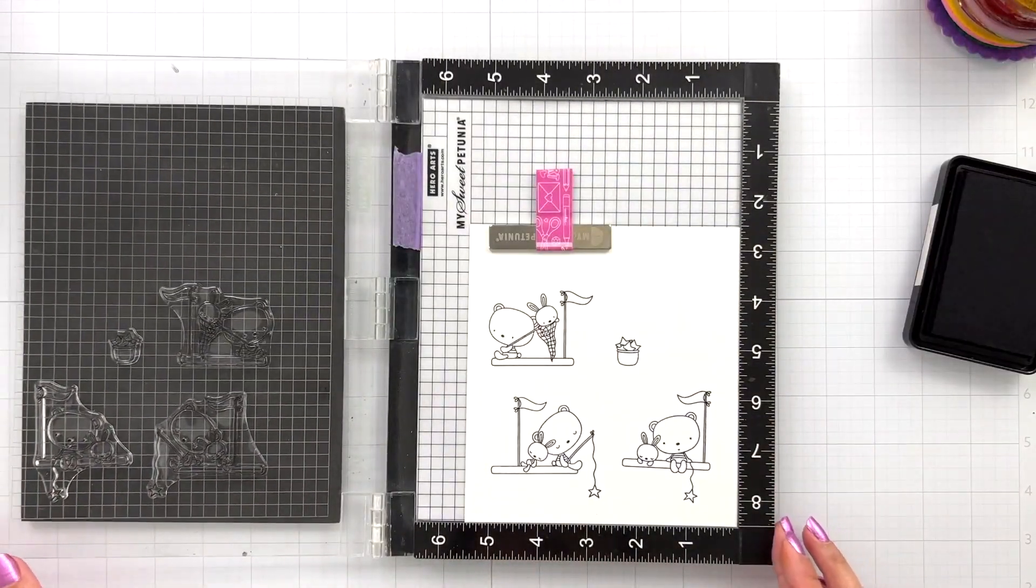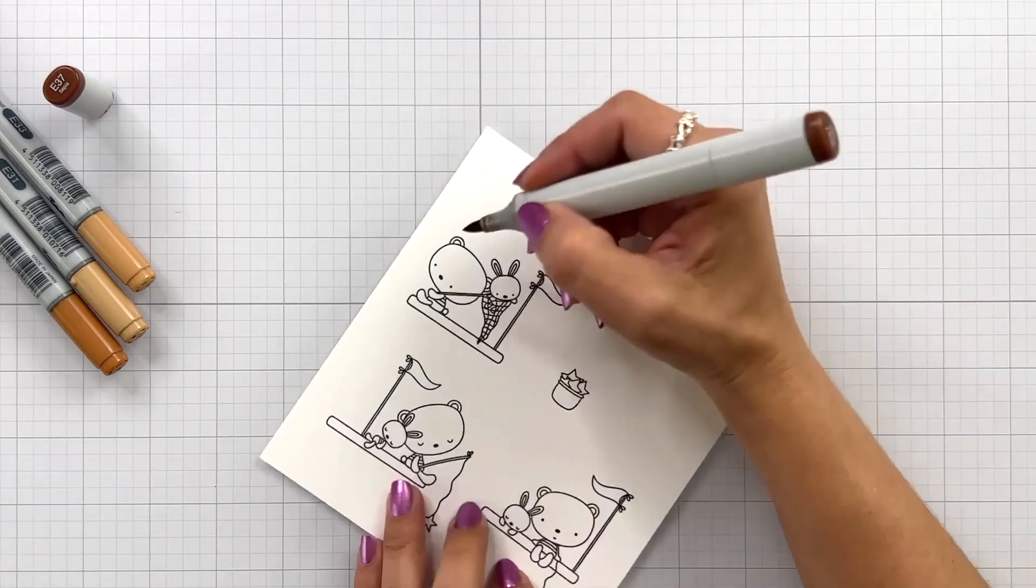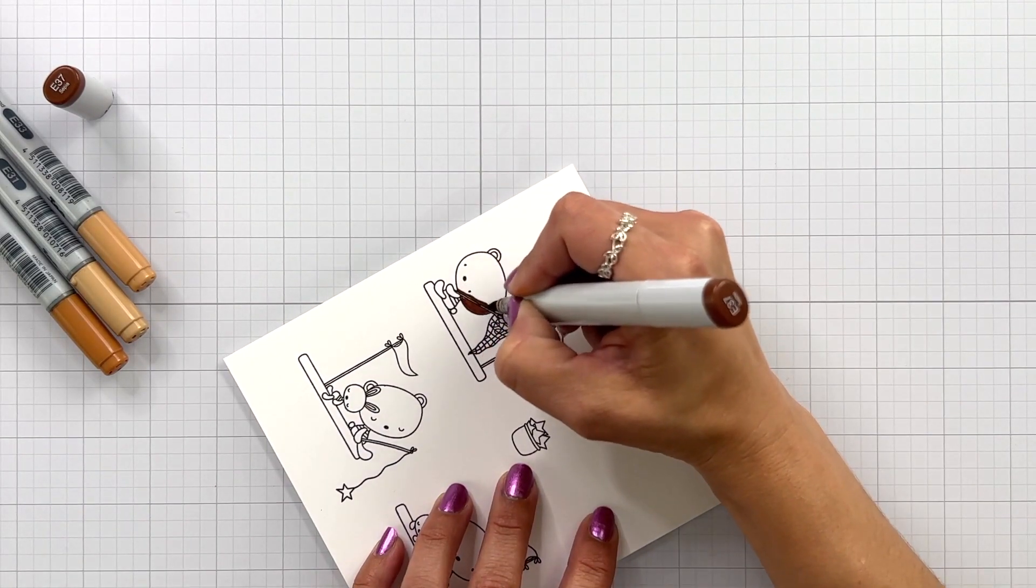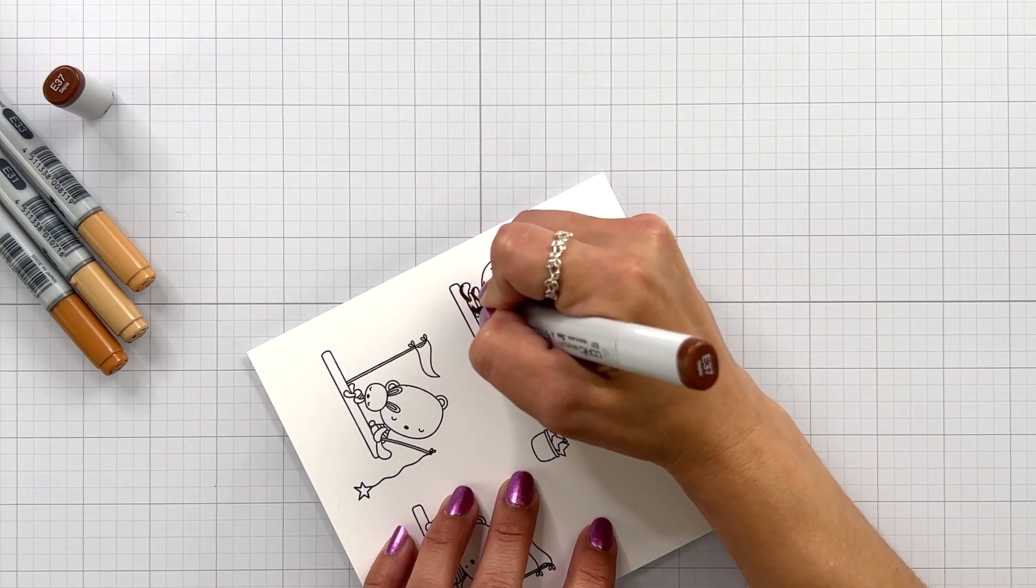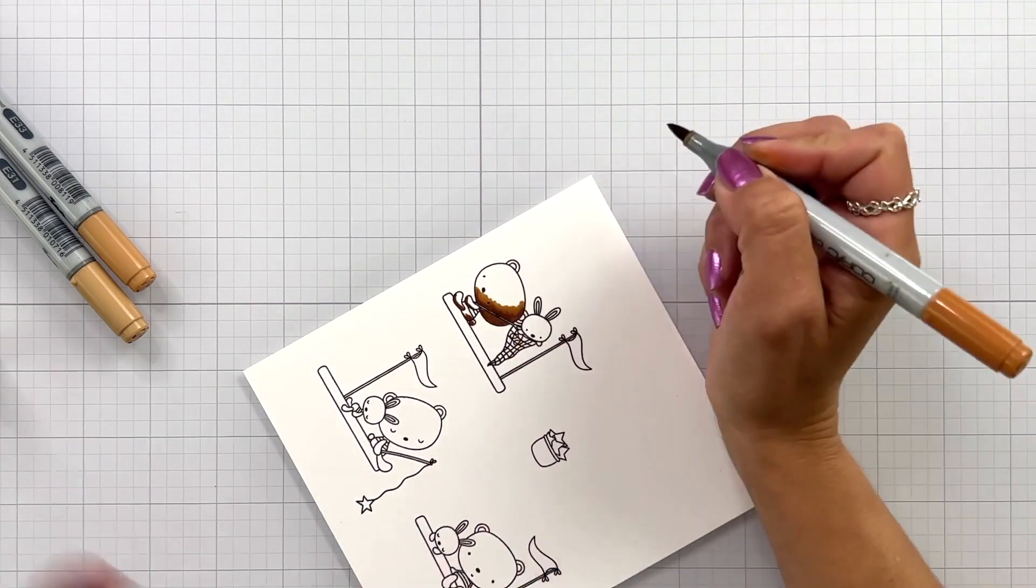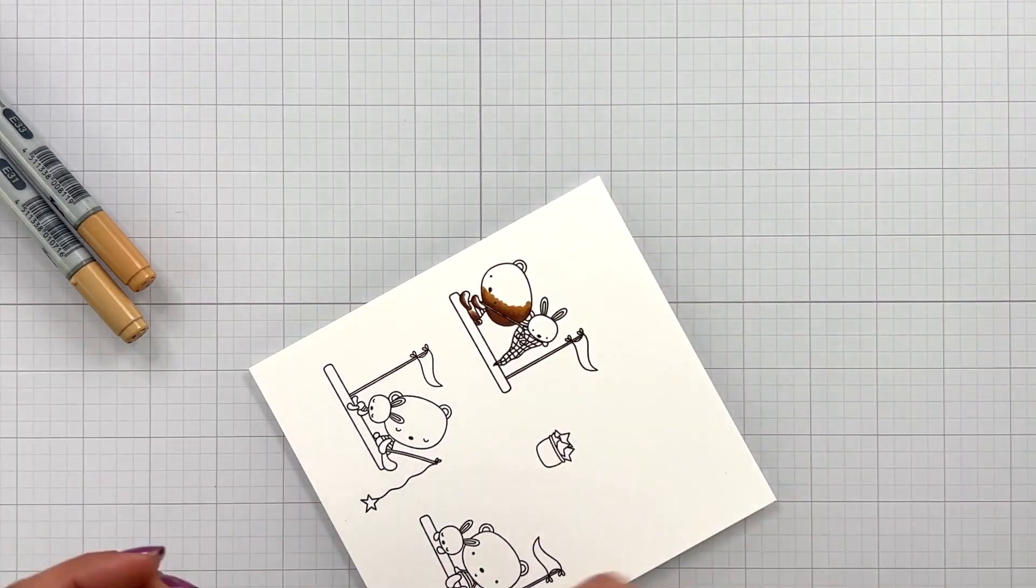Now I can start coloring these images with my Copic markers. For the colors I'm using for my bear today I'm actually doing a four color combo. Normally I would do three but the head has quite a bit of open space. So for those colors I'm using E37, 35, 33, and 31.